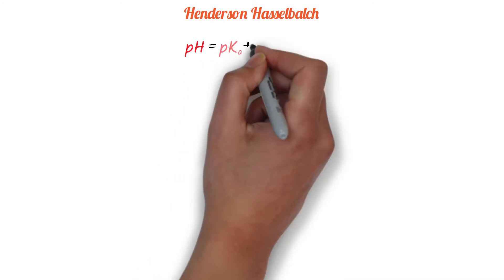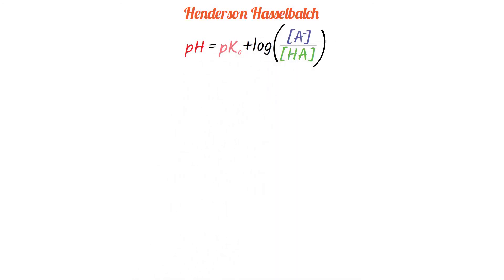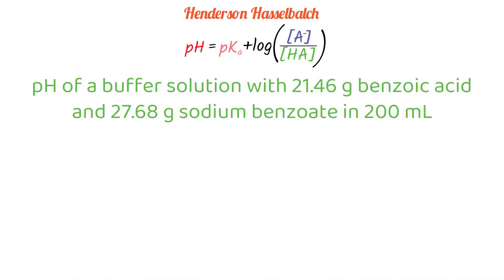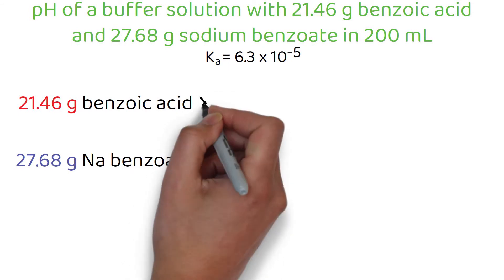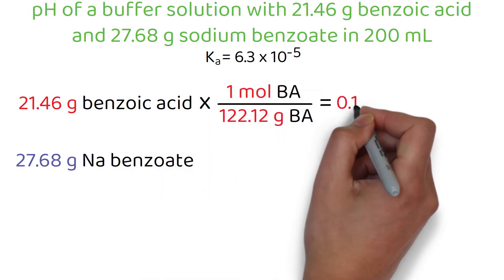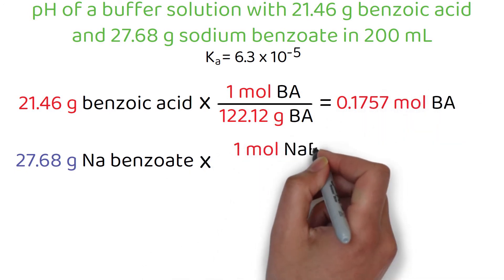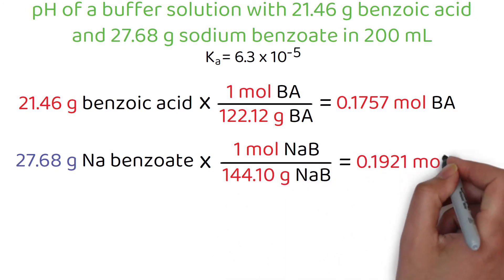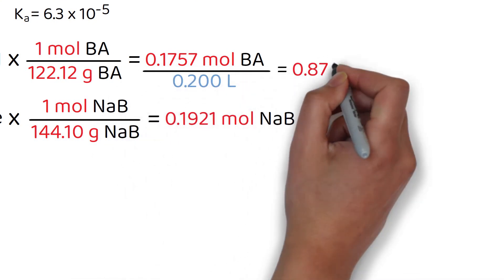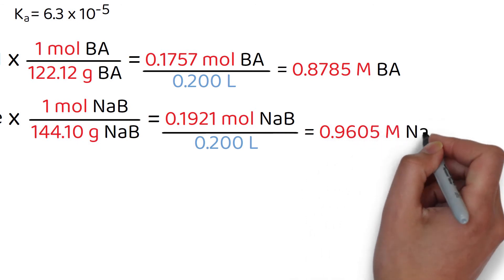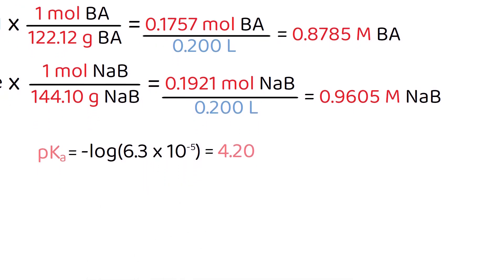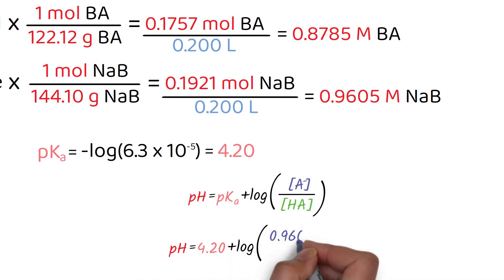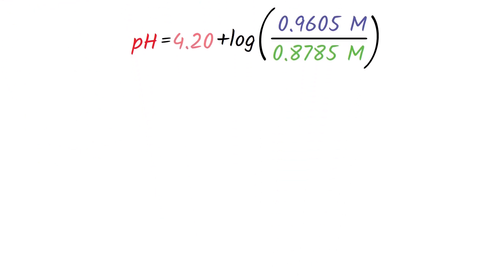Let's try one. What is the pH of a buffer solution prepared by dissolving 21.46 grams of benzoic acid and 27.68 grams of sodium benzoate in 200 milliliters of solution? The Ka for benzoic acid is 6.3 times 10 to the minus 5. We can use the molecular mass of benzoic acid and sodium benzoate to calculate the moles of each. We can use 200 milliliters to calculate the molarity of each species. Because benzoate is a conjugate base of benzoic acid, we can use the Henderson-Hasselbalch equation. The pKa is just the negative log of the Ka. So, we can set up the equation with what we have. Put these into the equation and we get a pH of 4.24.